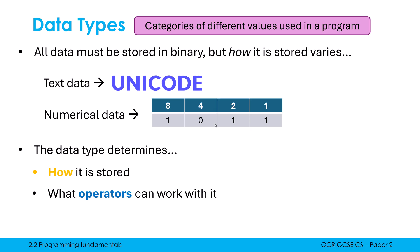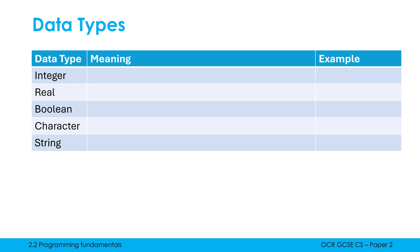But also this relates to the operators it can work with. We'll look at different operators in a couple of videos time. But for example, addition can be done using numerical data and concatenation can be done using text data. Both actually have the same symbol, which is a plus. For the purpose of Paper 2, there are five data types you've got to know by name.